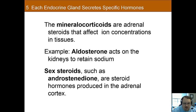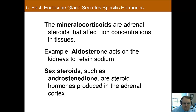A second group of adrenal steroids are the mineralocorticoids, named because they affect minerals such as sodium and potassium in the body. The primary mineralocorticoid is aldosterone, which causes the kidneys to retain sodium and reduces urine production — another way the body maintains homeostasis. The adrenal cortex also produces sex hormones such as androstenedione, which contributes to adult patterns of body hair in both men and women, and high levels in women can lead to a more masculine appearance.